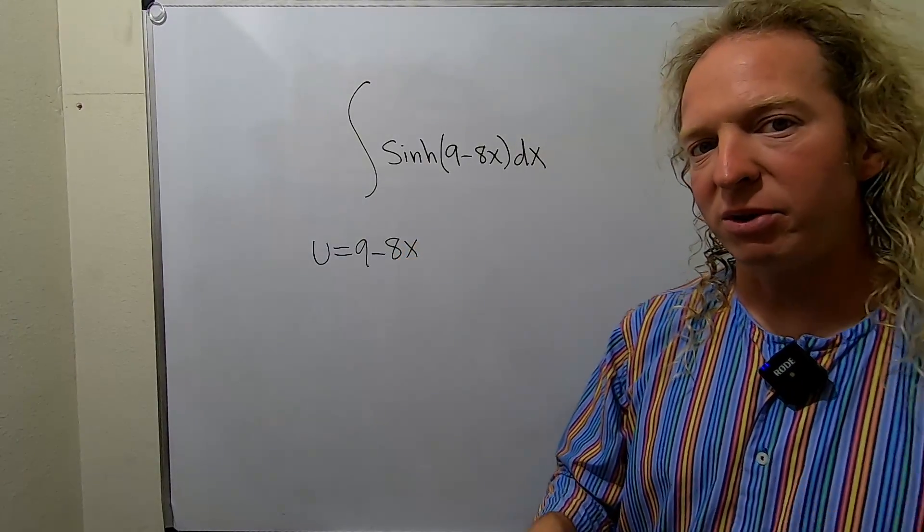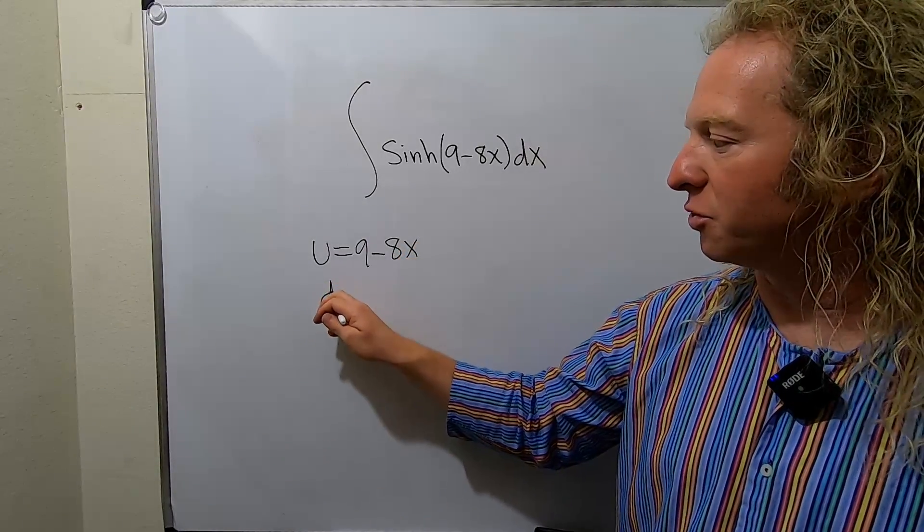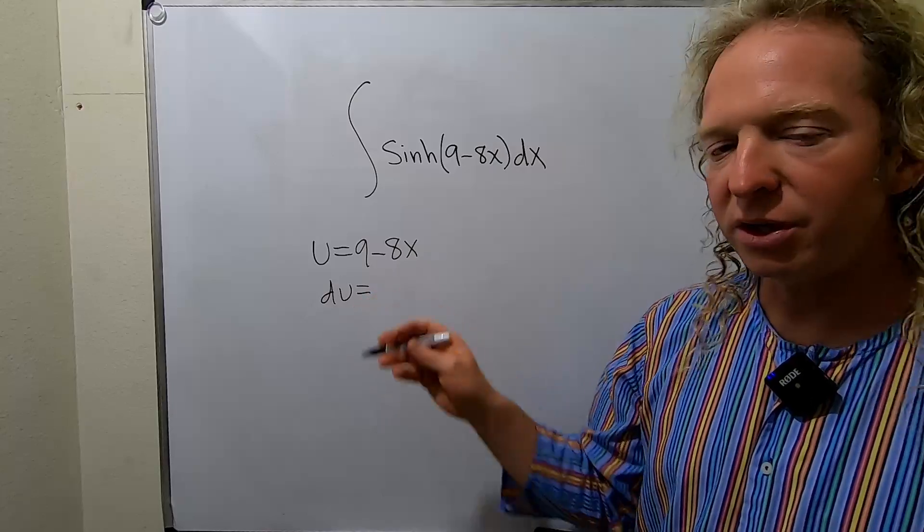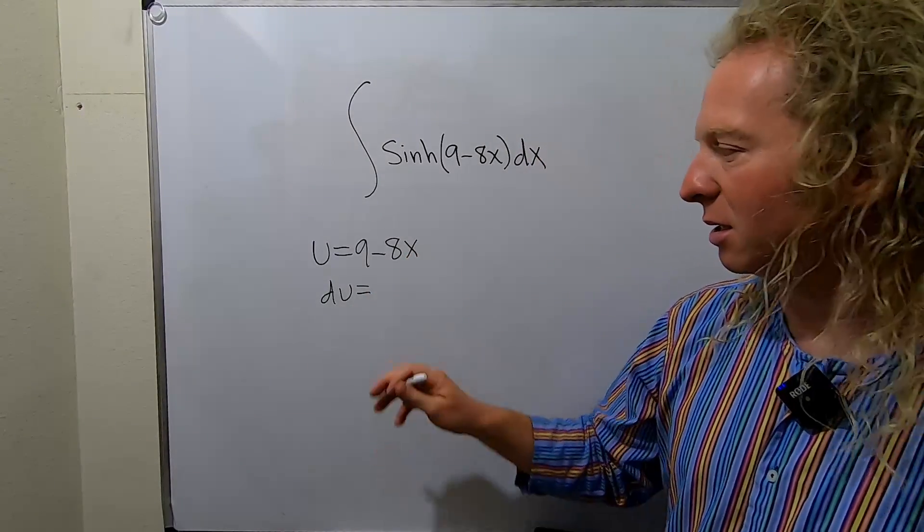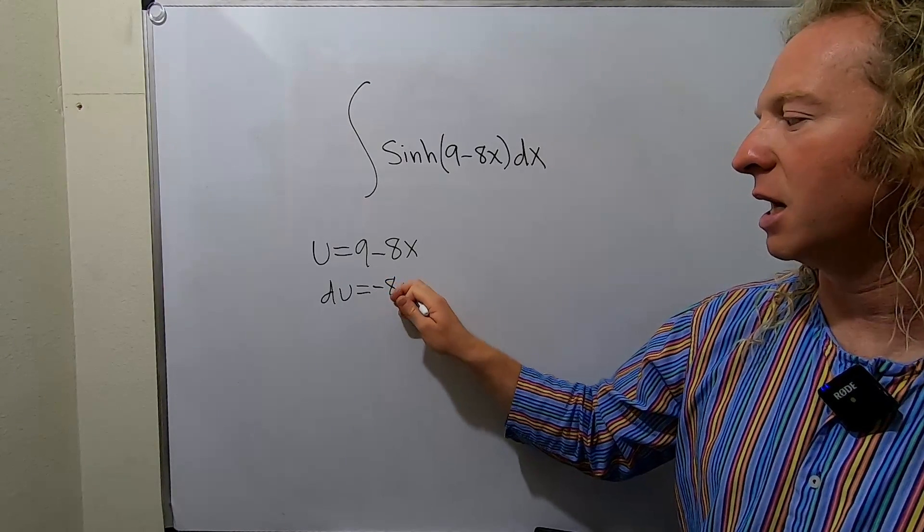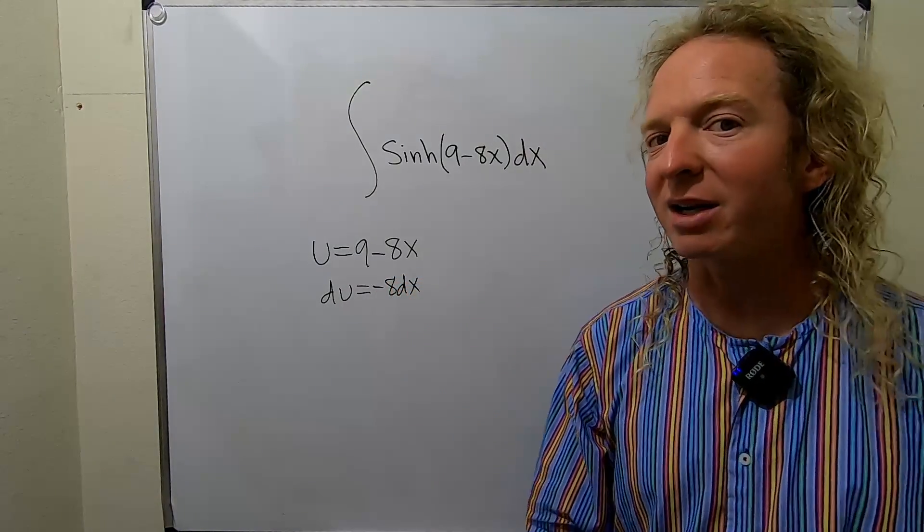Now we're going to compute du. So du is the derivative. The derivative of 9 is 0. The derivative of negative 8x is negative 8 dx, because the derivative of x is 1.